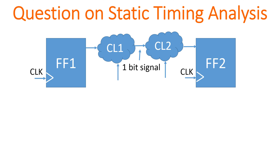Hello friend, welcome back to the channel. In this episode I am going to ask you a question on static timing analysis. Let us assume that the given flip-flop to flip-flop path is a critical path in the design, and it has two combination logics — combination logic 1 and combination logic 2. The very important thing about this critical path is that only one bit is passed from combination logic 1 to combination logic 2.